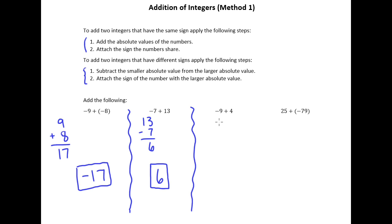Negative 9 plus 4. Again, we're in this second situation. Subtract the smaller absolute value from the larger absolute value. So 4 has a smaller absolute value than negative 9, right? Because again, absolute value just means ignore the sign. Just think of 9 and think of 4. So 9 minus 4 is 5. There's a difference of 5, but we're going to attach the sign of the number with the larger absolute value. So negative 9 had a bigger absolute value, so its sign is the winner. So we're going to attach a negative to negative 5.